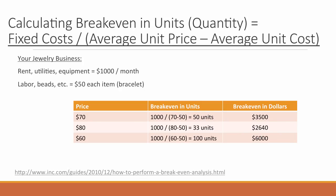Let's look at an example. Say you open a jewelry business and your fixed costs are $1,000 per month, and the variable cost for each item you sell is $50. If you price your items at $70, each item costs you $50, so you have $20 going toward your fixed costs. Take your fixed costs of $1,000 and divide by $20 — that means if you sold 50 units, you would break even, covering both your fixed and variable costs.